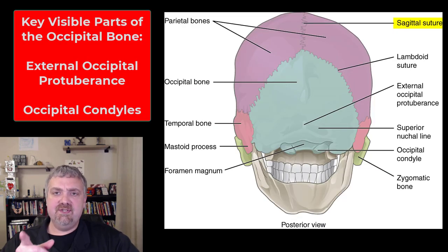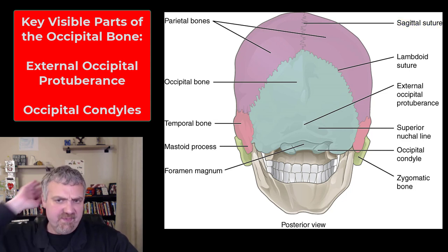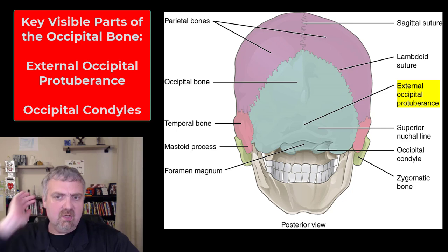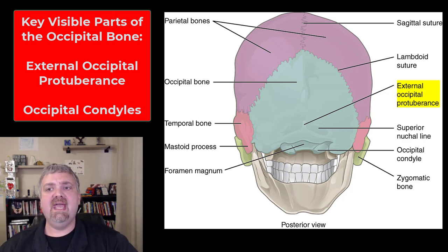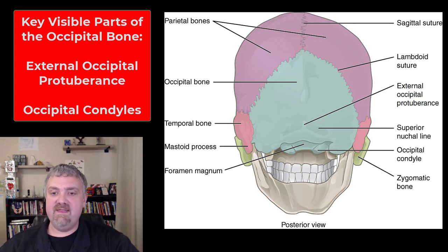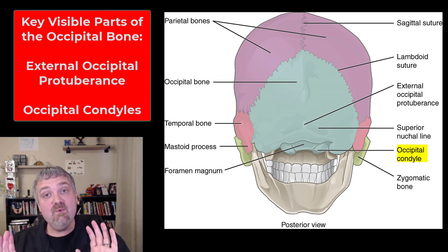Now the back view. You can finally see the sagittal suture connecting the two parietal bones. The bump on the back of the skull is the external occipital protuberance of the occipital bone. You can also see the two rounded occipital condyles — that's where your skull sits on C1, the first cervical vertebra called the atlas.